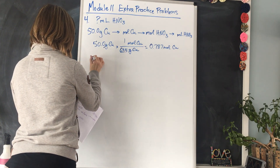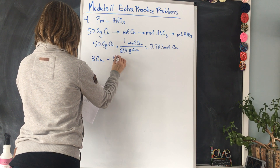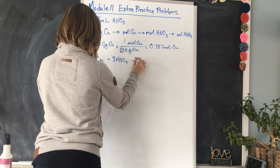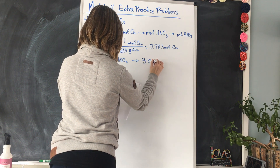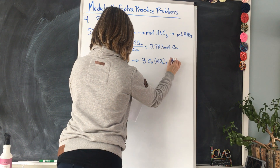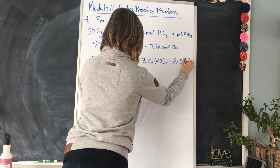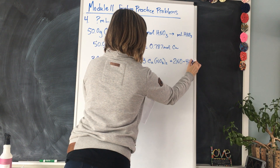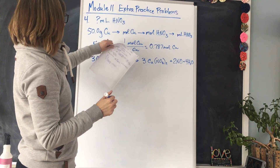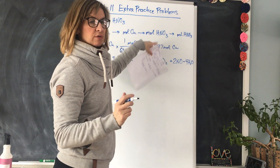Now we look at the balanced equation: 3Cu + 8HNO3 → 3Cu(NO3)2 + 2NO + 4H2O. Now we're moving from moles of copper to moles of HNO3.